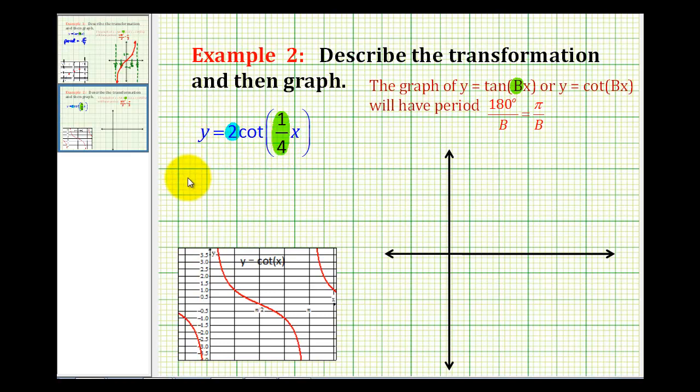So the period is going to be equal to pi divided by b, but in this case, b is one-fourth. So pi divided by one-fourth is the same as pi times four over one. So the period of this function is going to be four pi radians.